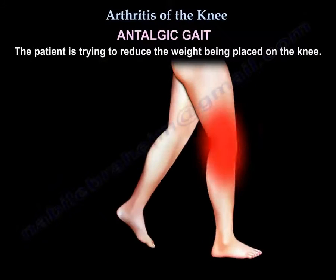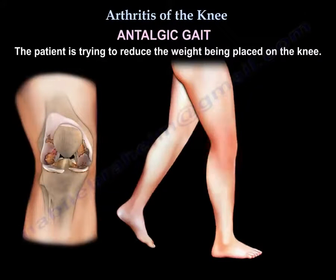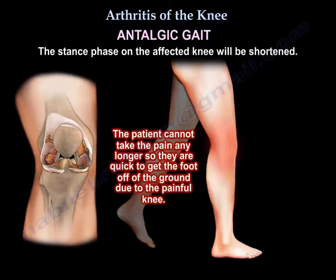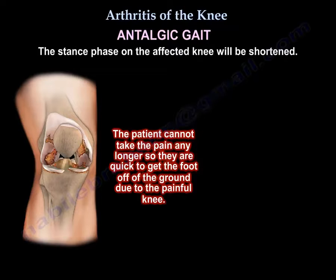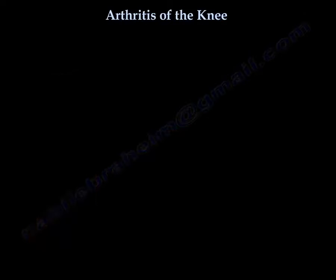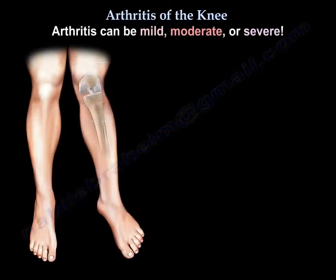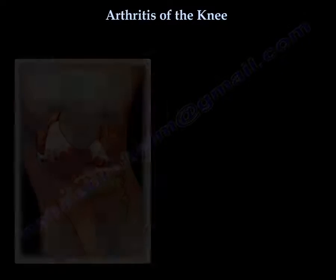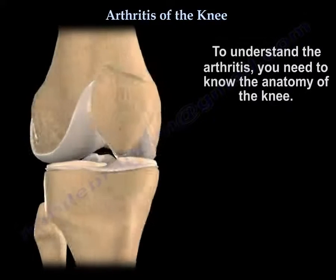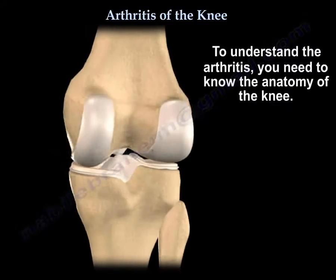The patient compensates for the arthritis and pain in the knee by limping — this gait is called antalgic gait. The patient tries to reduce weight on the knee, so the stance phase on the affected knee is shortened because the patient needs to get their foot off the ground quickly due to pain.